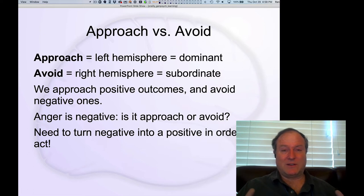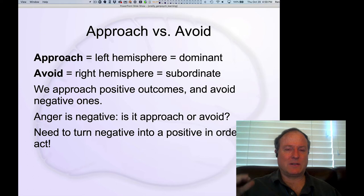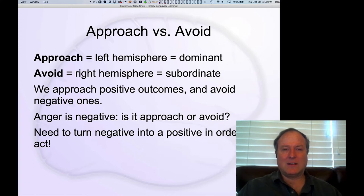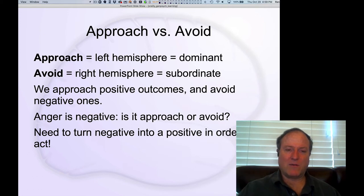Another interesting test case for the approach versus avoidance dimension is anger. Anger is a reaction to a negative outcome — it's some kind of negative overall affect, but it's a more active response. Sadness is a more passive response. It turns out anger ends up being more left hemisphere coded as an active response to negative things, as opposed to a right hemisphere thing associated more with avoidance strategies.